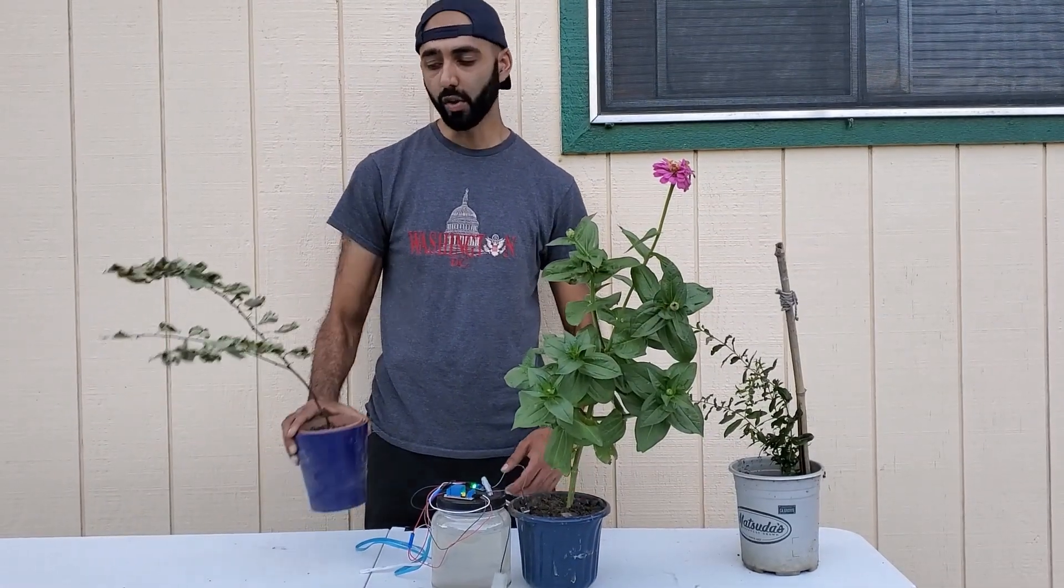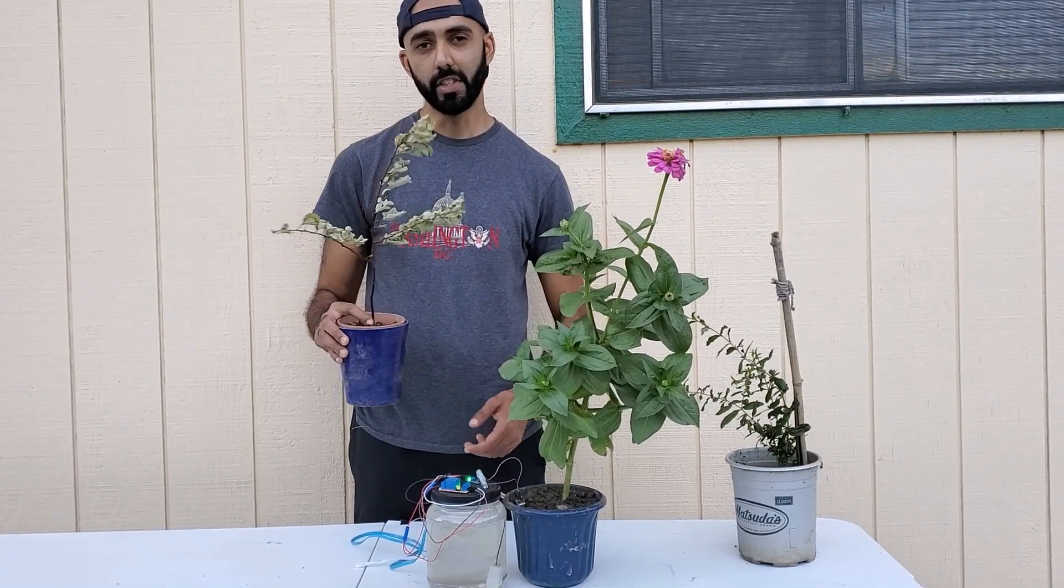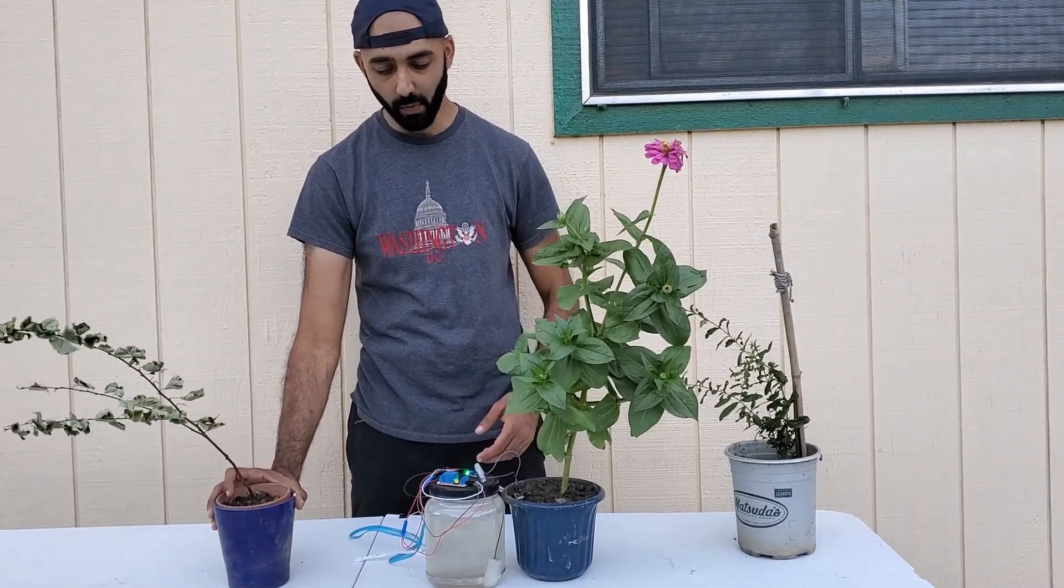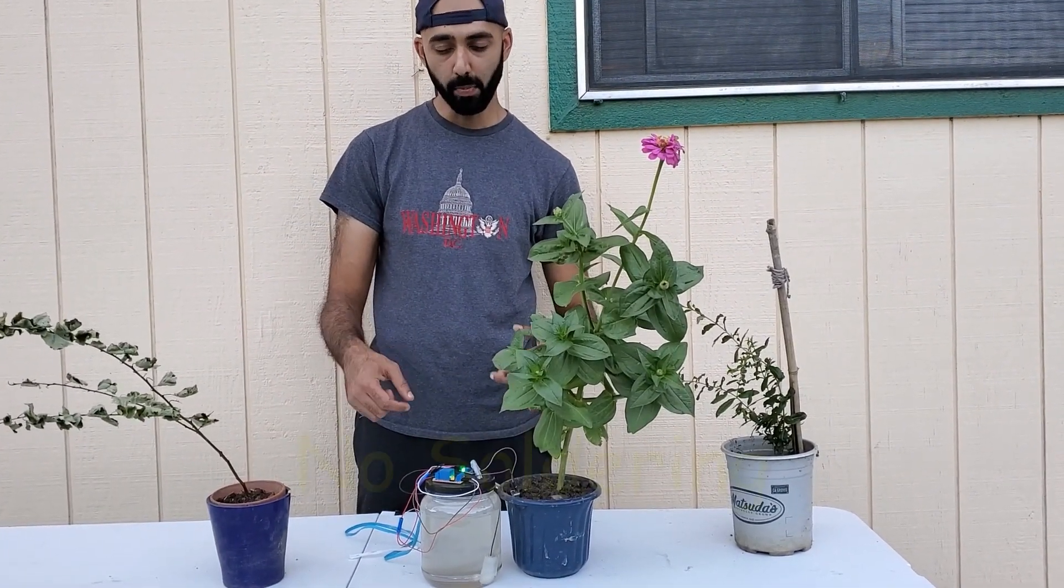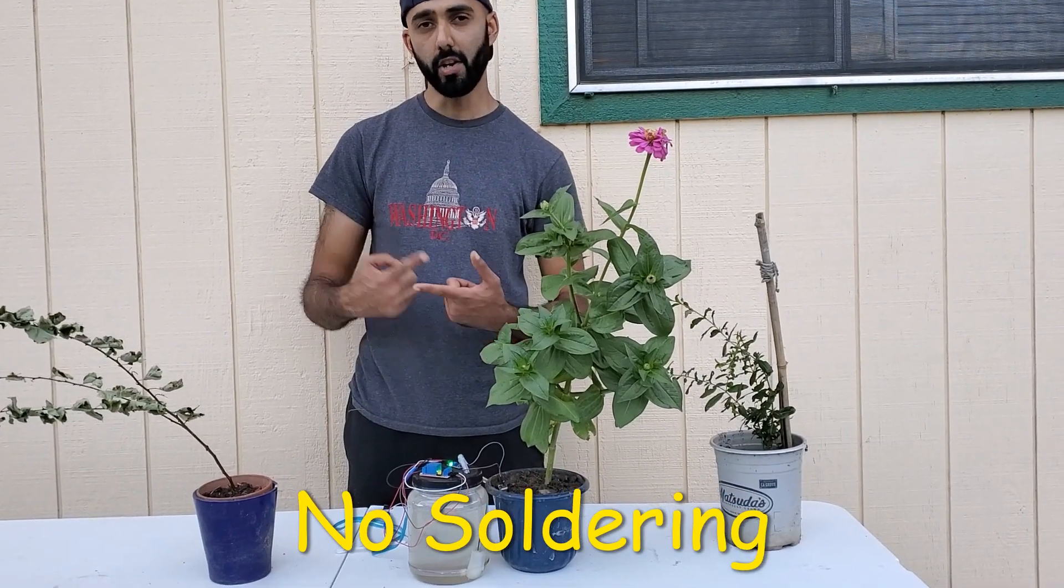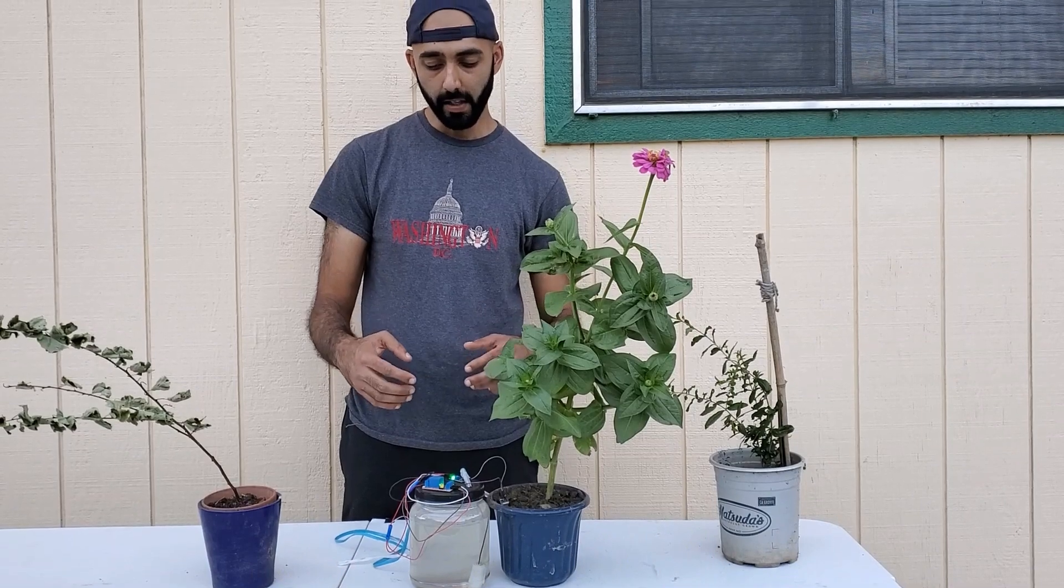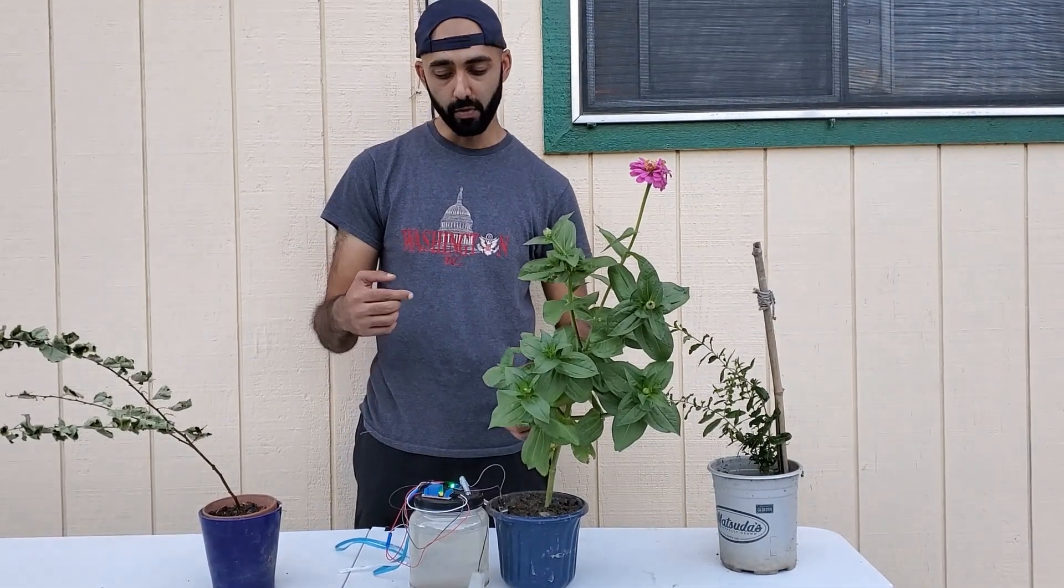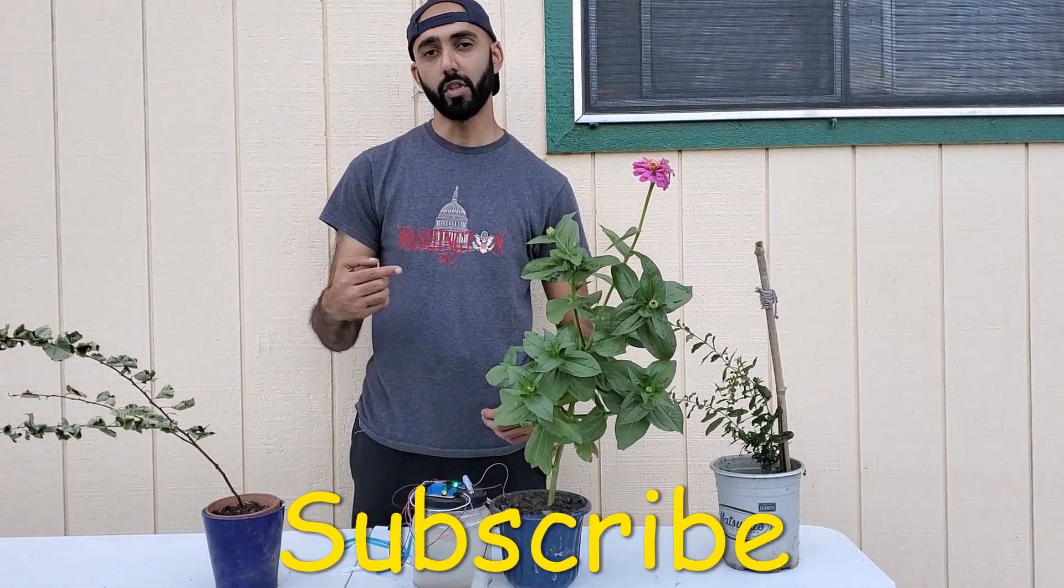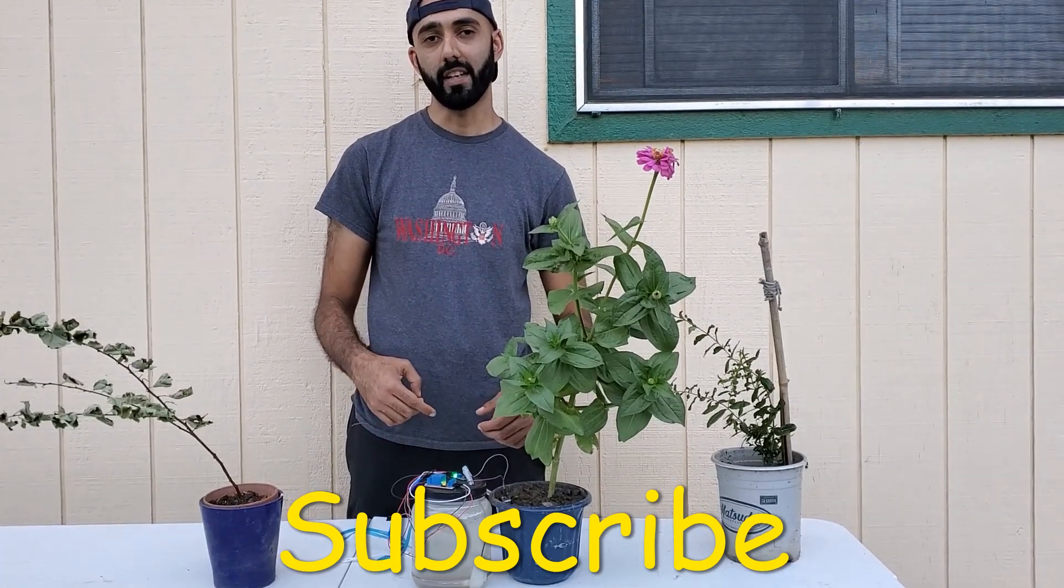If you're new to gardening, you're all too familiar with this scene right here, which is a dried up and shriveled plant. That's why I designed this simple plant watering system. There's no soldering and there's no Arduino involved, just simple plug and play wiring. If you like this DIY project, make sure you subscribe to my channel, Duct Tape Mechanic.